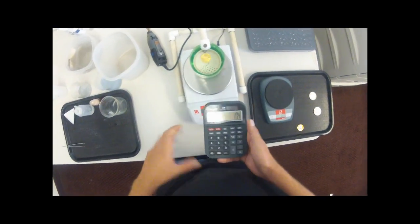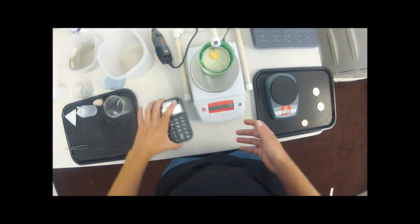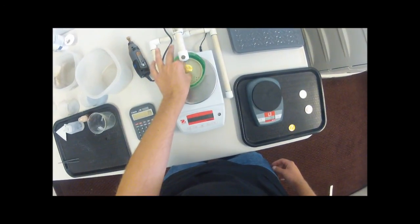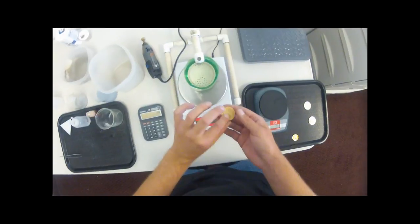So that gives us 17.4 grams per cubic centimeter, which is exactly what we're looking for. Between 17 and 18 is what you want to see for the 22 carat.